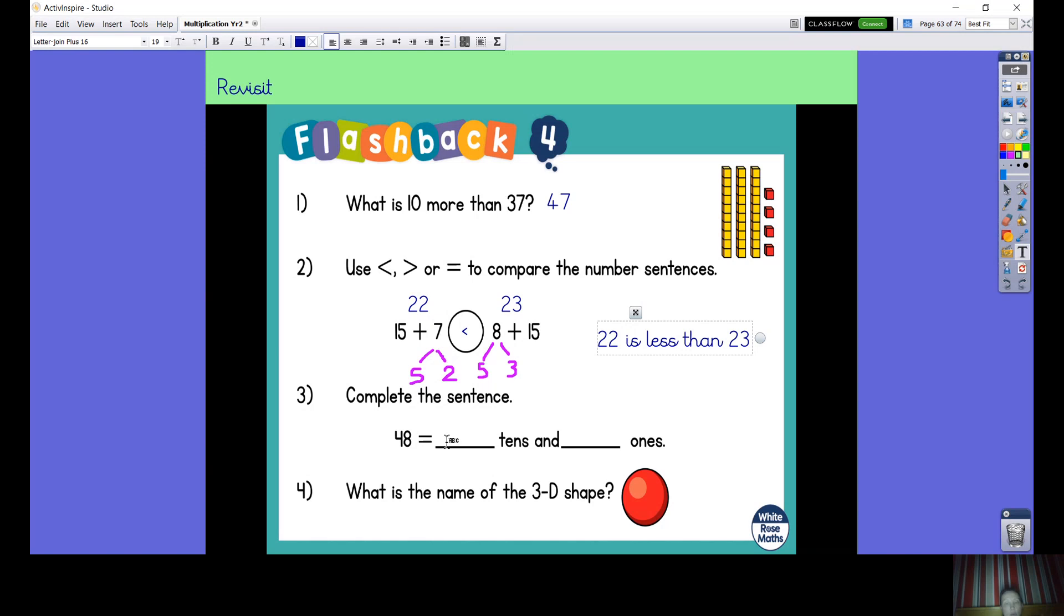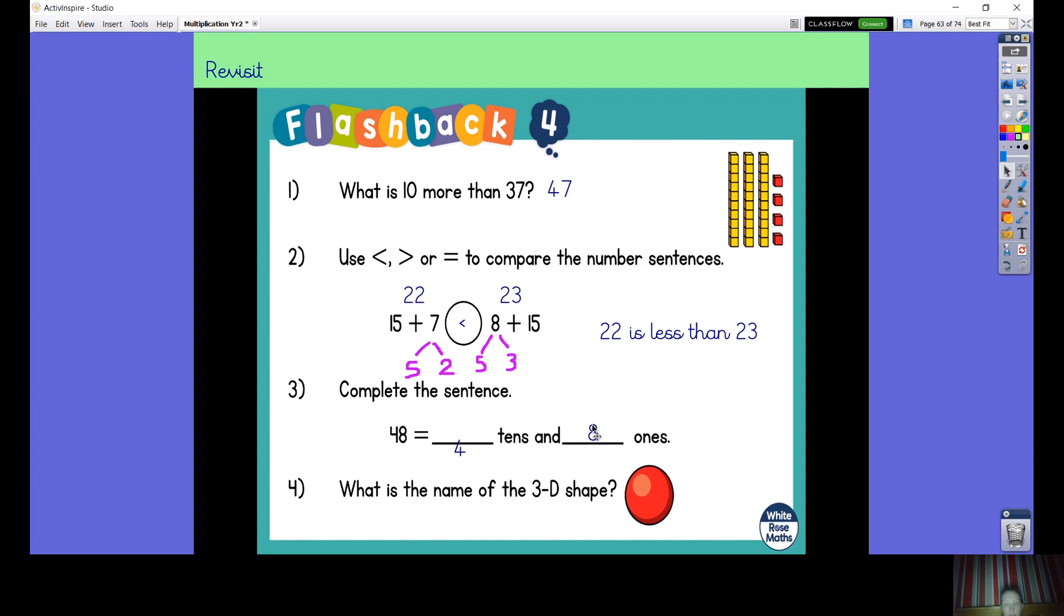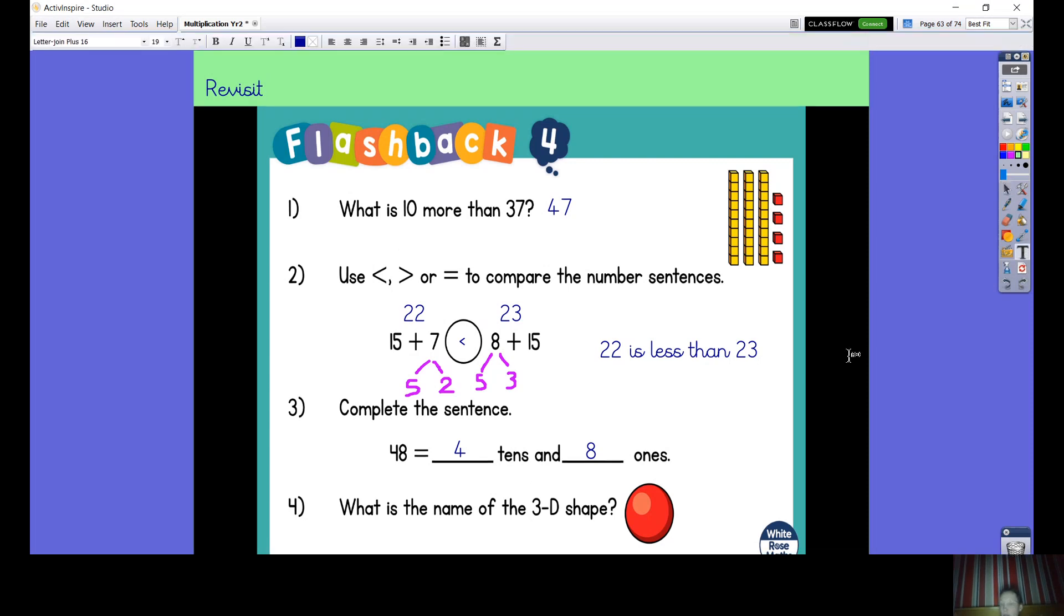Let's have a look at this sentence. Complete the sentence: 48 equals tens and ones. Well, I know that the 4 means the tens and the 8 shows us how many ones there are, so we have got 4 tens and 8 ones.